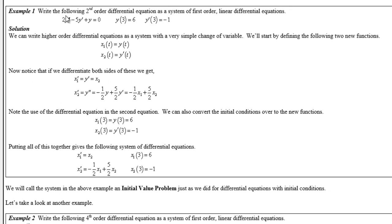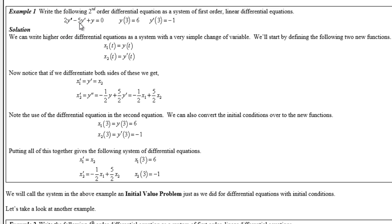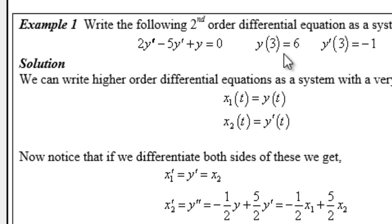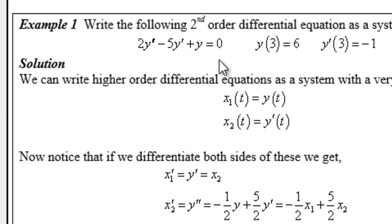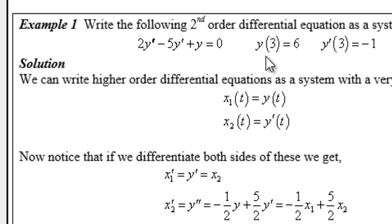So we have the second order differential equation: 2y'' minus 5y' plus y equals 0, with initial conditions y(3)=6 and y'(3)=-1. Here prime denotes a derivative with respect to t, since y is a function of t, and double prime means the second derivative with respect to t.